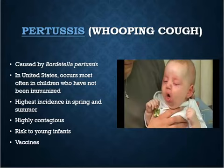Pertussis is most likely seen in unvaccinated populations. Anyone who will be around an infant — dad, grandparents, siblings — should get a TDap vaccine, since for the first couple of months before the infant's first dose, even with passive immunity from mom, the infant is highly susceptible.